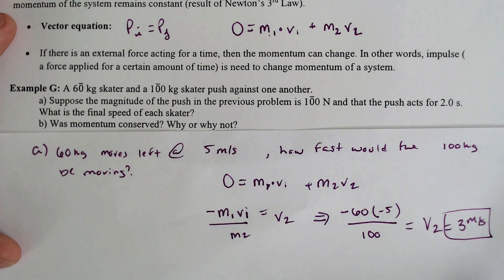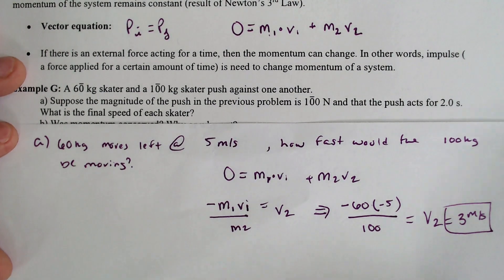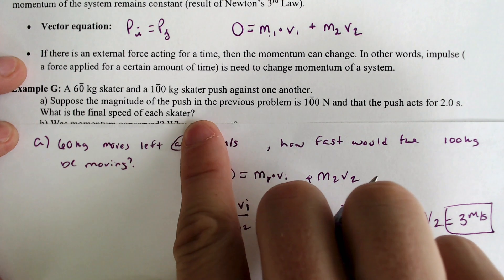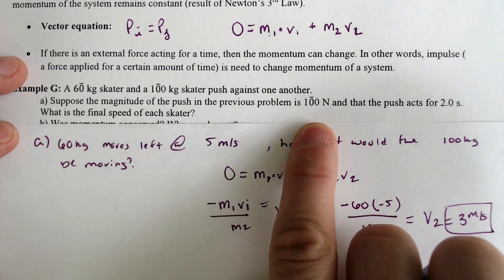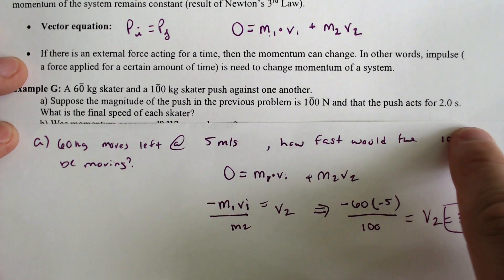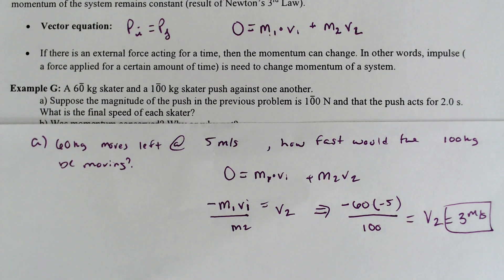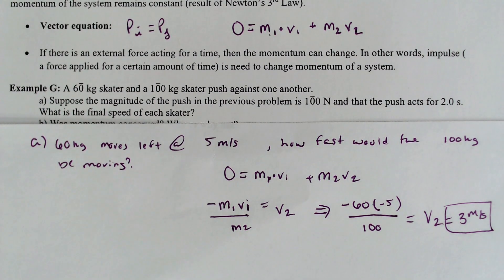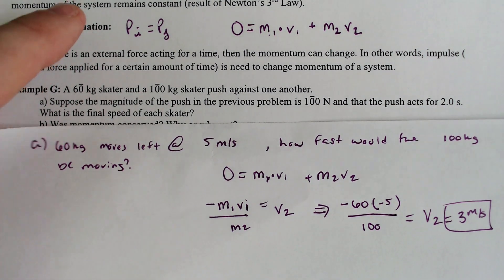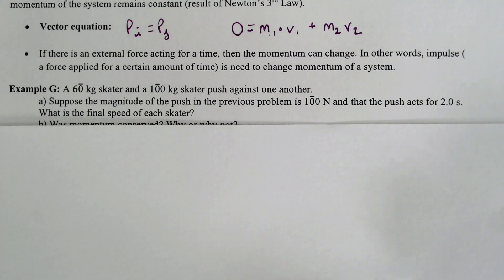So what if the magnitude of the push in the previous problem is 100 newtons, and that push acted for two seconds? So we're changing a few of the things here. We're saying that the magnitude of the push lasted,